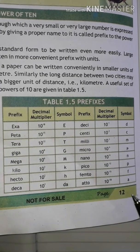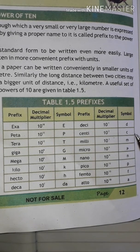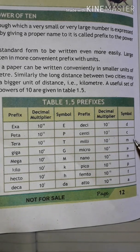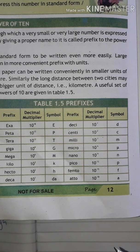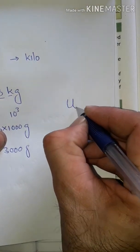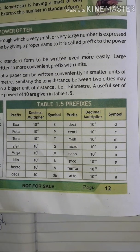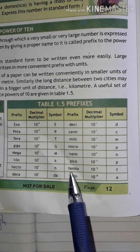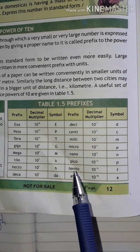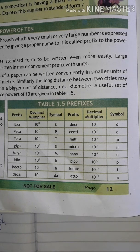On the negative side: 10 power minus one is deci with symbol d. 10 power minus two is centi with symbol c. 10 power minus three is milli with symbol m. 10 power minus six is micro, and it has a special Greek symbol. 10 power minus nine is nano with symbol small n. 10 power minus 12 is pico with symbol p. Minus 15 is femto with symbol f. And minus 18 is atto with symbol a.